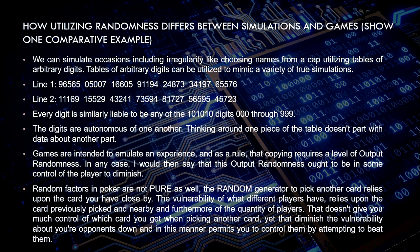Similarly in games, games are intended to emulate an experience and that copying requires a level of output randomness. However, this output randomness ought to be in some control of the player. Random factors in poker are not pure either. The random generator that picks another card relies upon the cards you already have. If you have a different card, the game will be totally different — it depends on the random generator for picking the card.